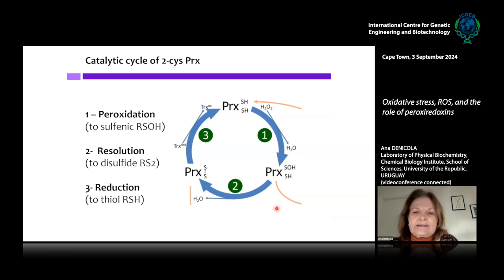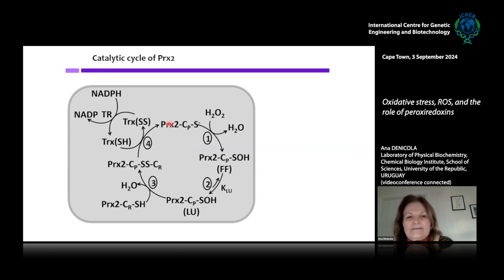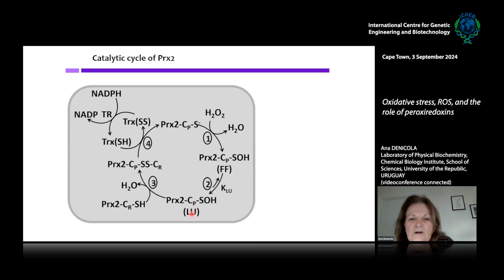Going back to kinetics and the catalytic cycle of the two-Cys PRX, we can simplify the catalytic cycle in three steps: the peroxidation — the reaction with the peroxide substrate to form the sulfenic acid derivative — then the resolution step to form the disulfide, and finally the reduction at the expense of thioredoxin. In more detail, after the sulfenic acid derivative is formed there is a conformational change from the fully folded to the locally unfolded PRX, and the locally unfolded conformation brings together the peroxidatic cysteine and the resolving cysteine to form the intermolecular disulfide — one unique characteristic of peroxyredoxins.